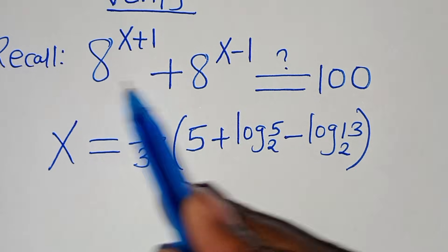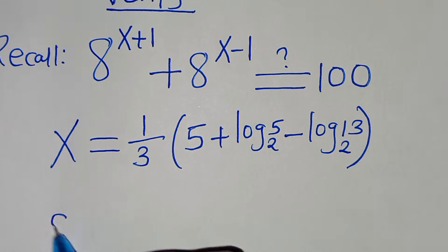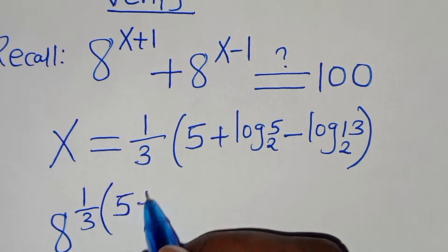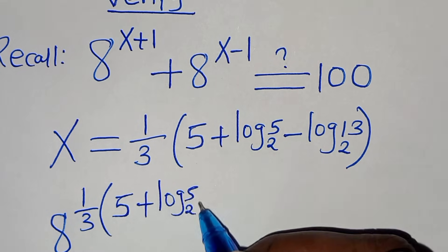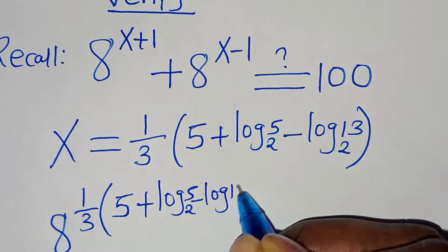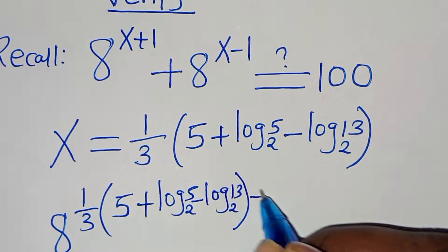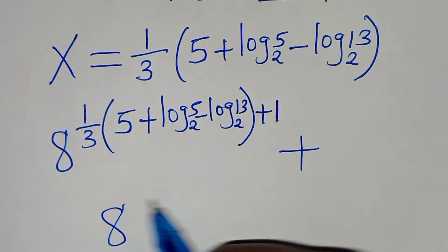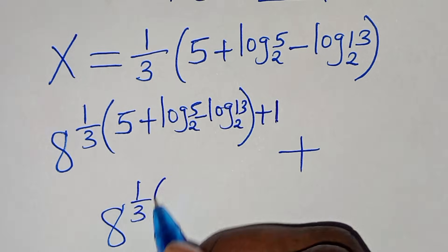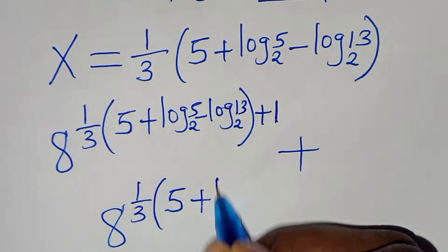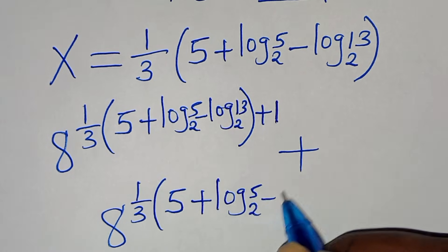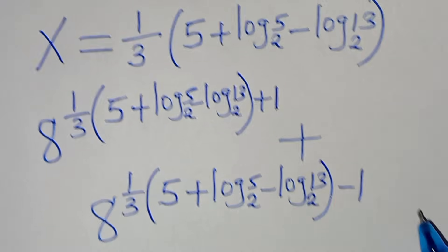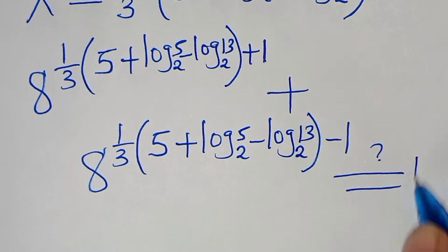Substituting x, we have 8 to the power of (1/3)(5 + log_2(5) − log_2(13)) + 1, plus 8 to the power of (1/3)(5 + log_2(5) − log_2(13)) − 1, and this should give us 100.